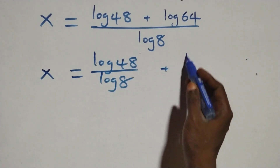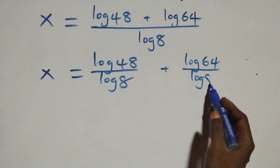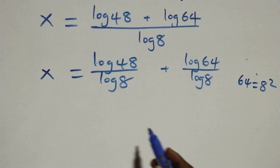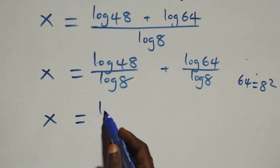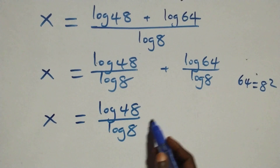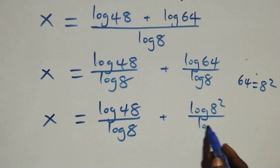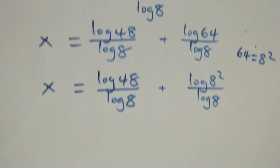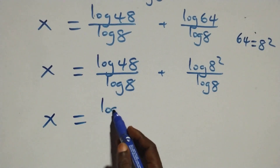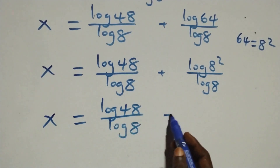We can rewrite 64 as 8 squared, so what we have becomes x equals log 48 over log 8 plus log of 8 squared over log 8. Applying the power rule, this becomes x equals log 48 over log 8 plus 2 log 8 over log 8.